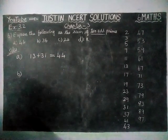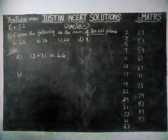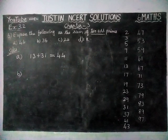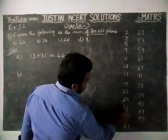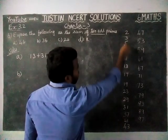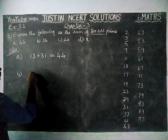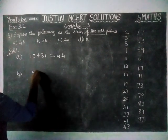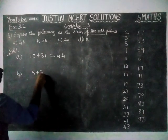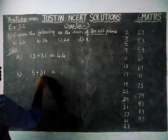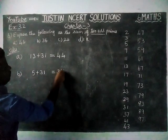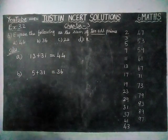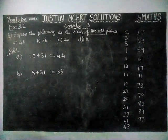Option B: we need 36. 5 plus 31 is equal to 36.